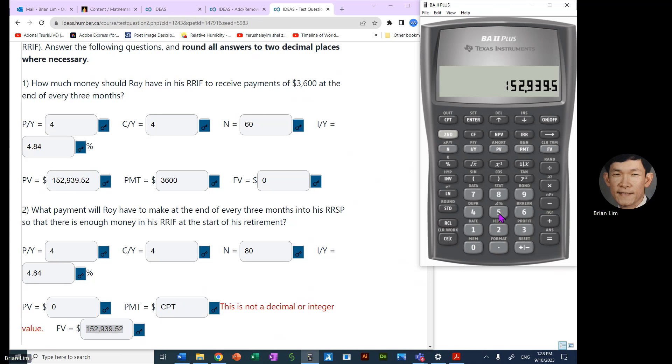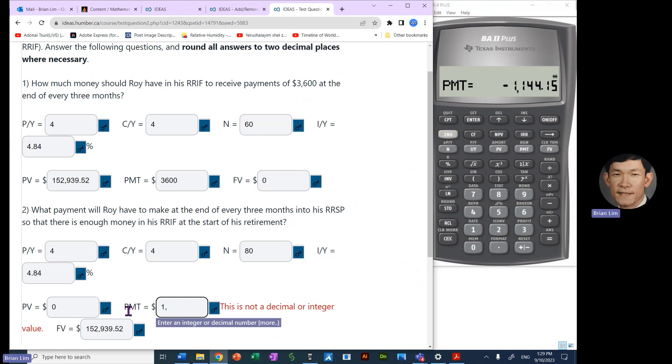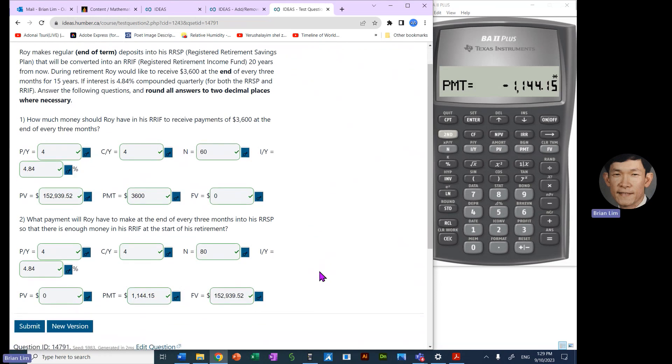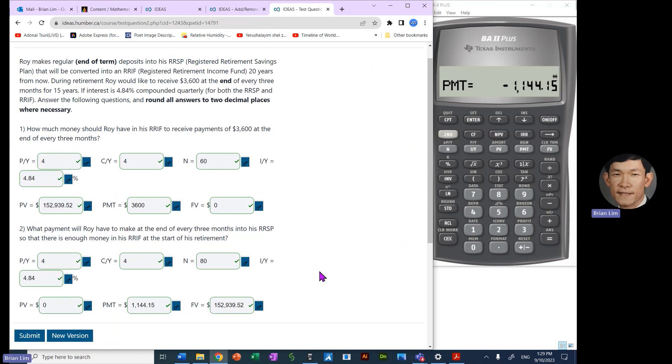$152,939.52 and that is the goal of what Roy needs to accumulate after 20 years. So now we compute the payment. Roy has to make payments of $1,144.15 every three months. OK, and if we submit, we were correct. Right, so there it is.